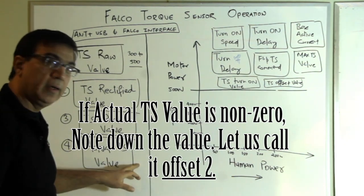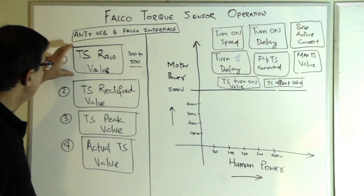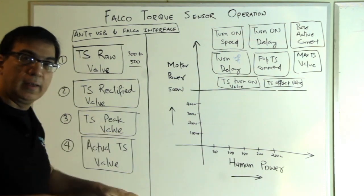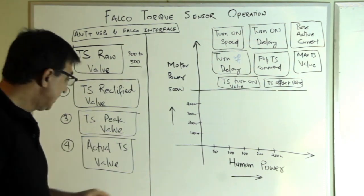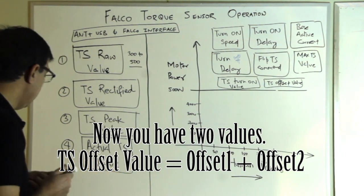But if there's a count here, you're looking for two counts. One is variation in the raw value when you sit on the bike. And the second is you want to look at the actual TS value.